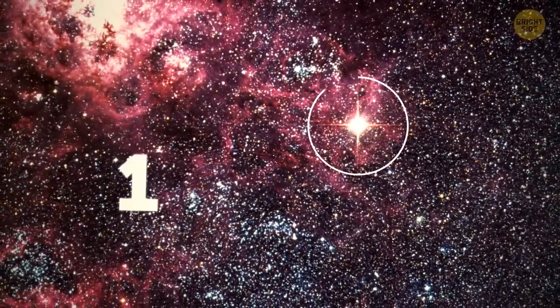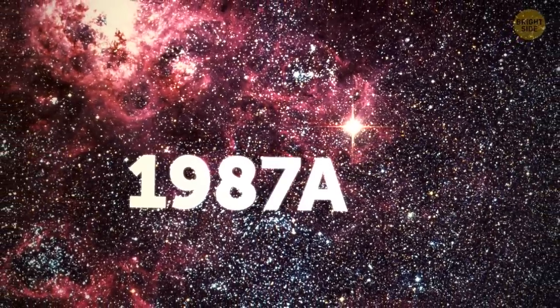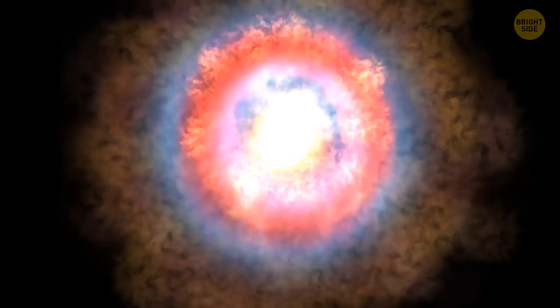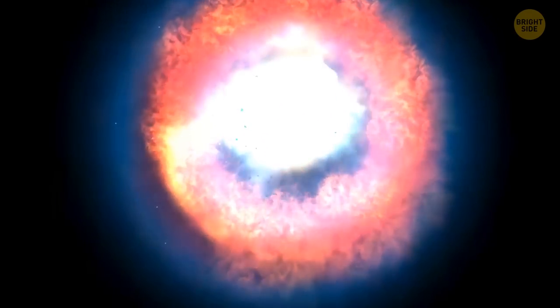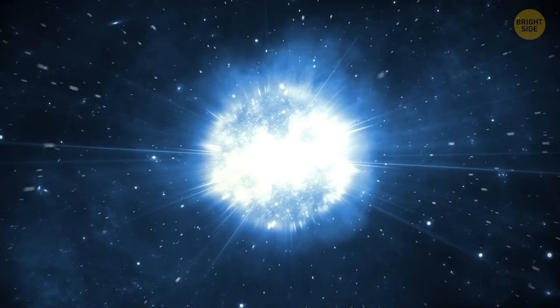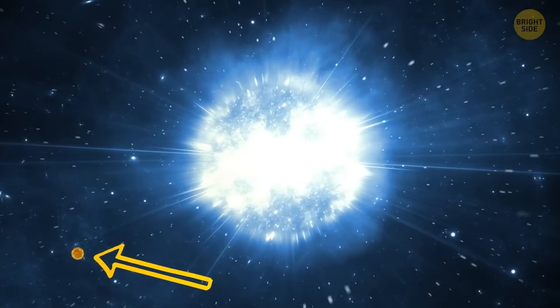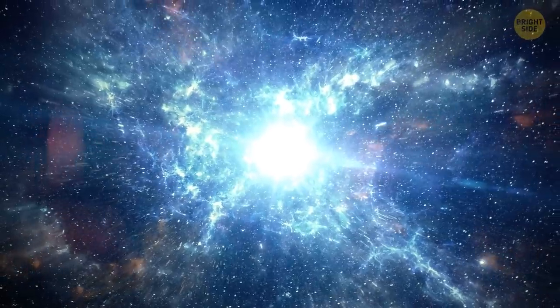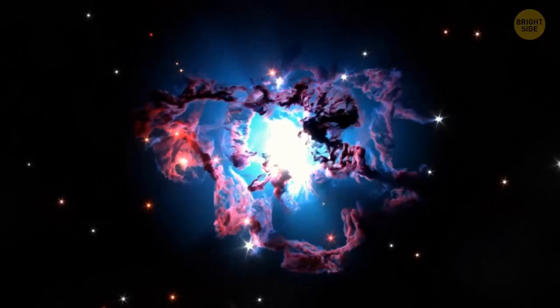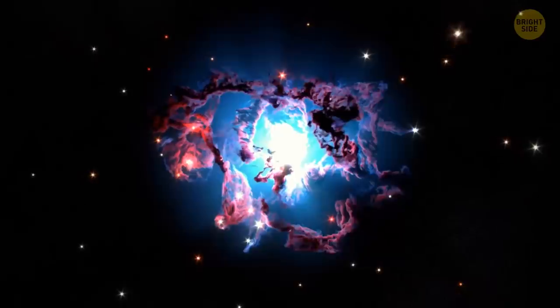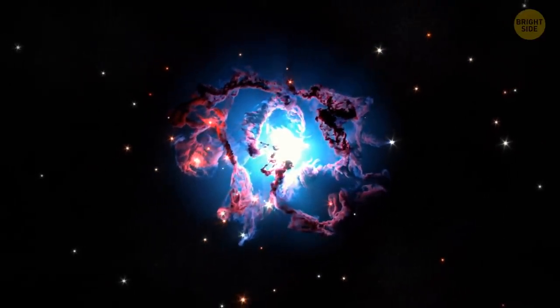You can see supernova 1987A at about 2 o'clock high. A blue giant star, 100,000 times brighter than the Sun, experienced a core implosion, resulting in a type 2 supernova 100 million times brighter than the Sun. It has left behind a neutron star, clouded in dust and gas, and a wildly spectacular display of fireworks.